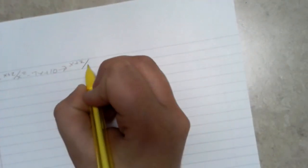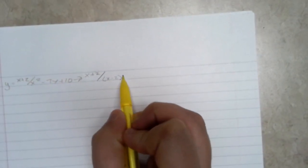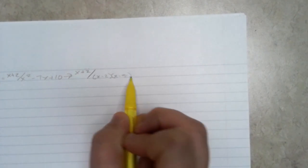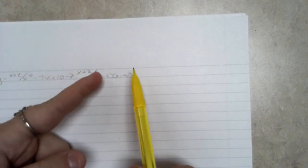x plus 2 - I factored, so it was x minus 2 and x minus 5. So if you plug in 2 or 5, positive 2 or positive 5, this whole denominator would be zero.